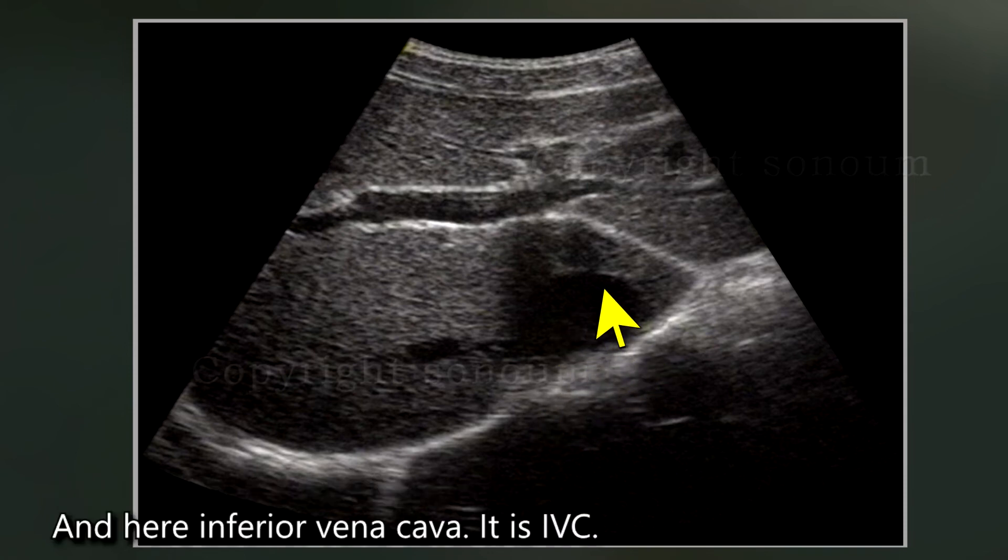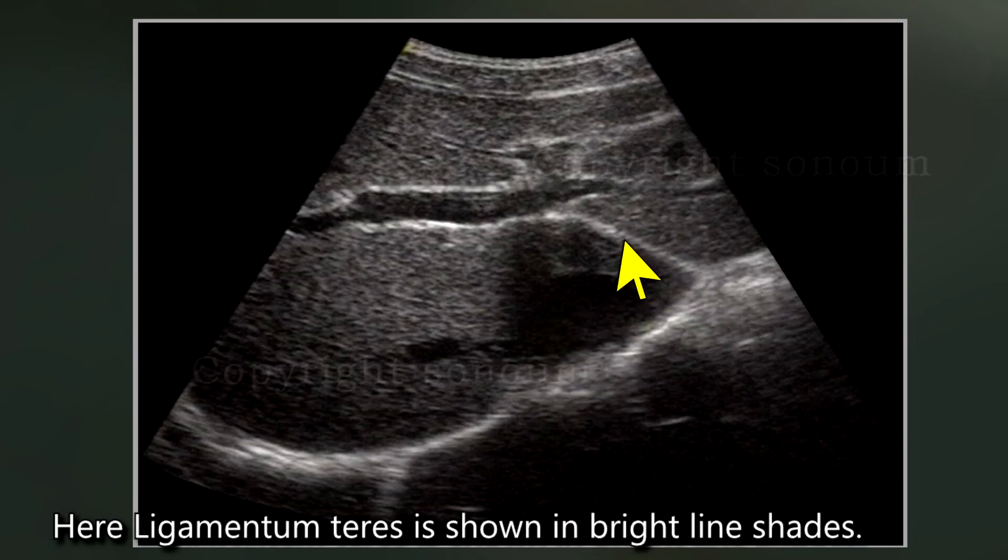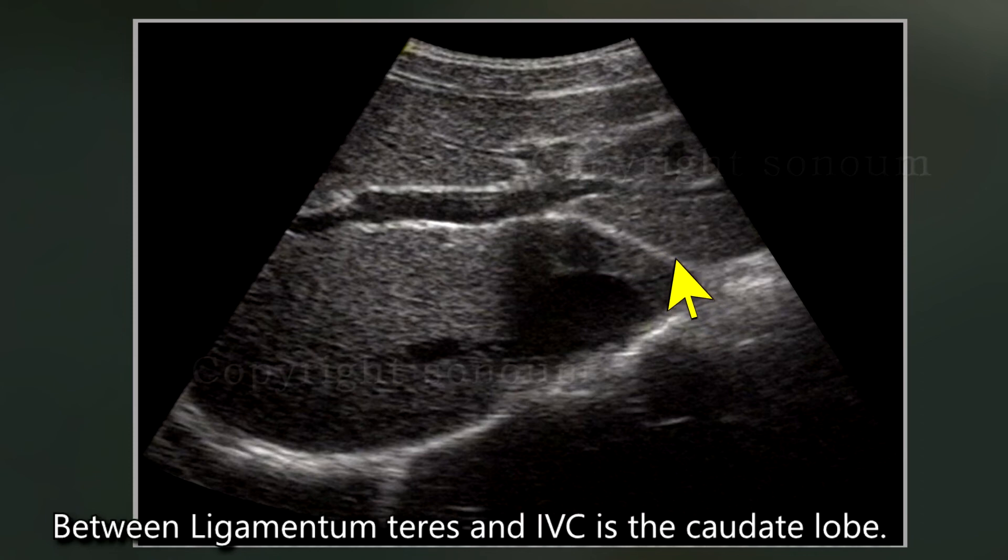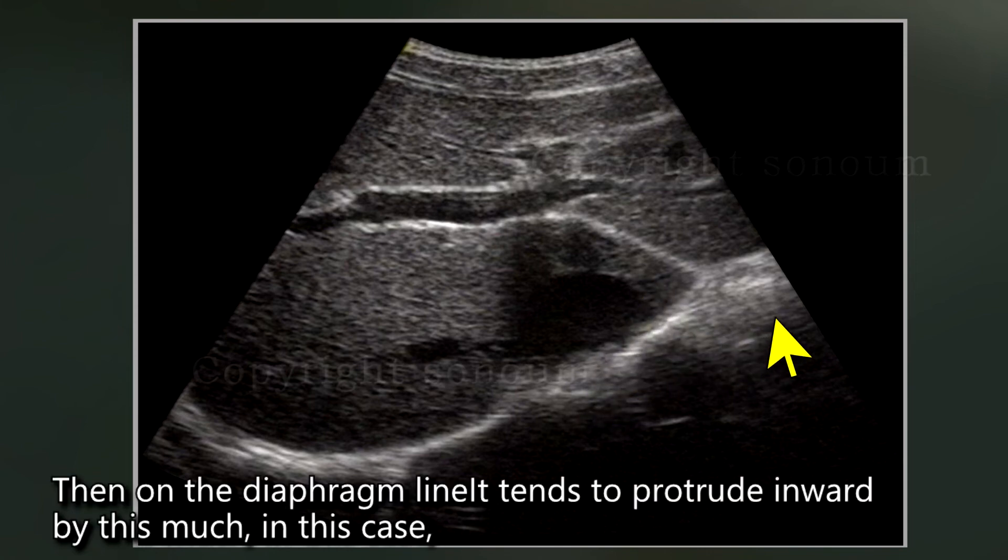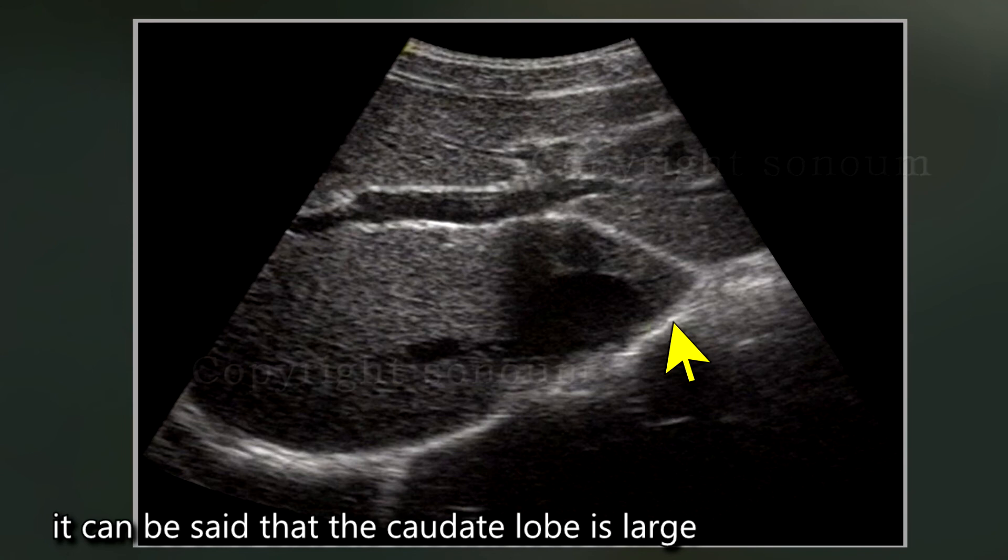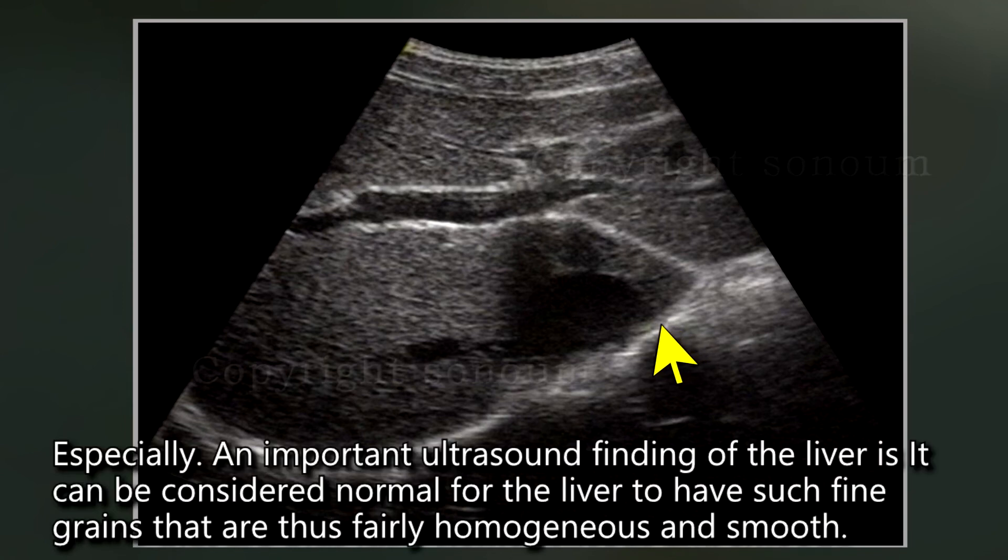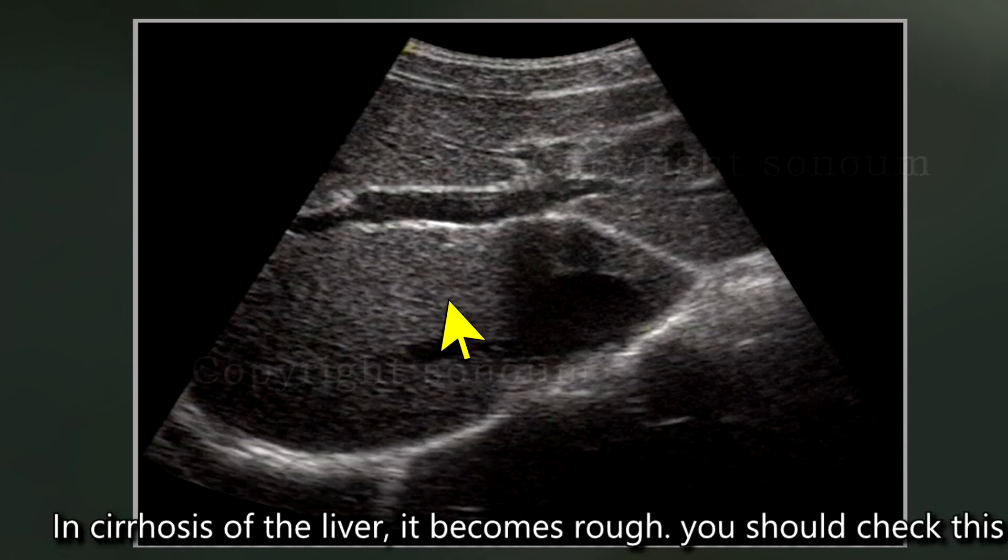And here inferior vena cava. It is IVC. Here ligamentum teres is shown in bright line shades. Between ligamentum teres and IVC is the caudate lobe. In cirrhosis of the liver, the caudate lobe enlarges. Then on the diaphragm line, it tends to protrude inward by this much. And in this case, it can be said that the caudate lobe is large. Especially, an important ultrasound finding of the liver is, it can be considered normal for the liver to have such fine grains that are fairly homogeneous and smooth. In cirrhosis of the liver, it becomes rough. You should check this.